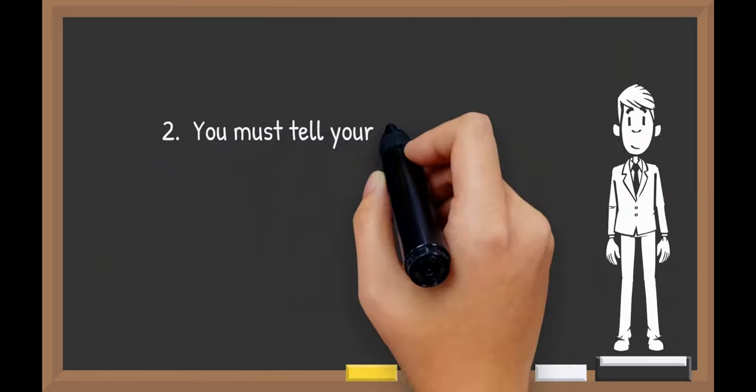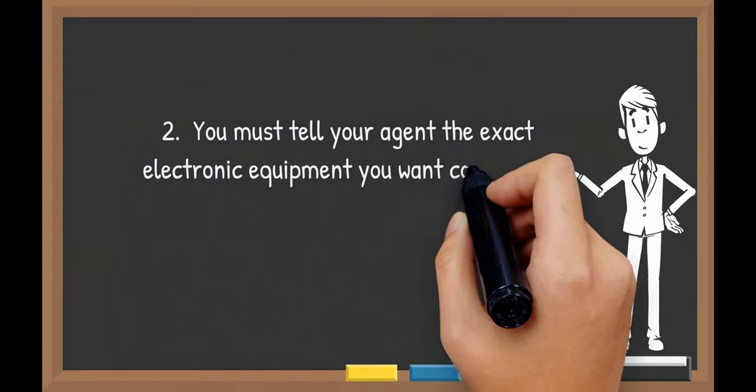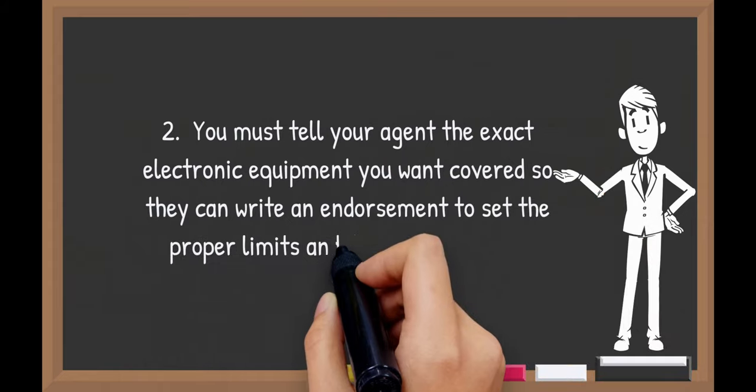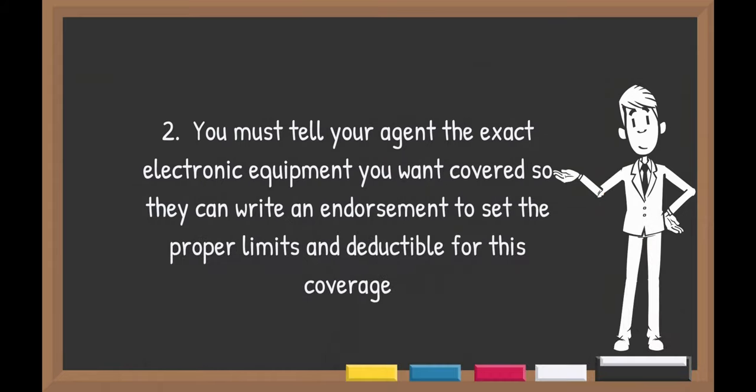Number two, you must tell your agent the exact electronic equipment you want covered so they can write an endorsement and set the proper limits and deductible for this coverage.